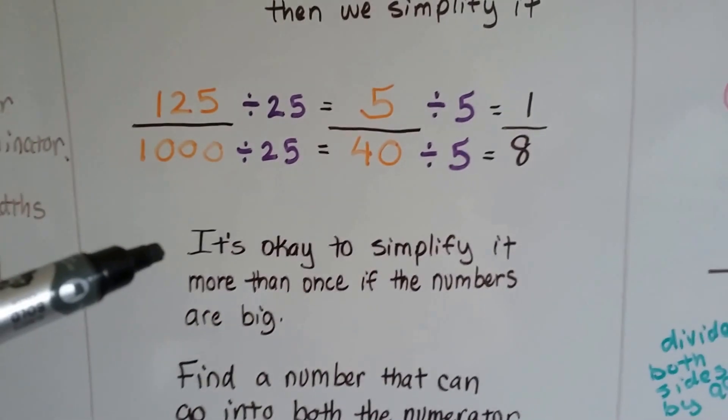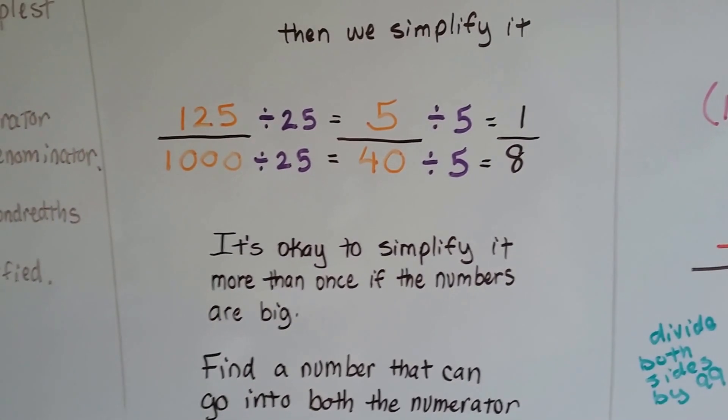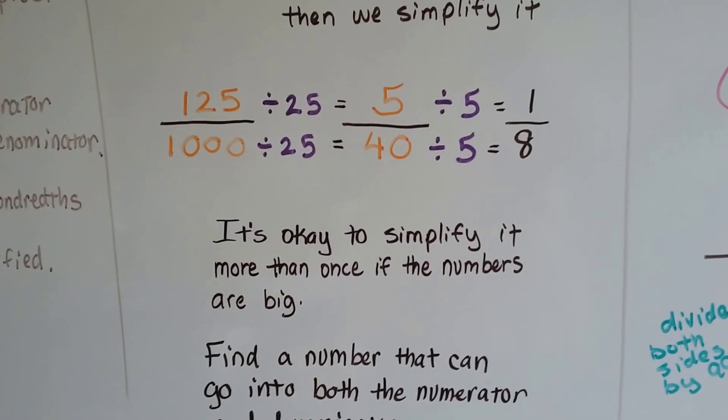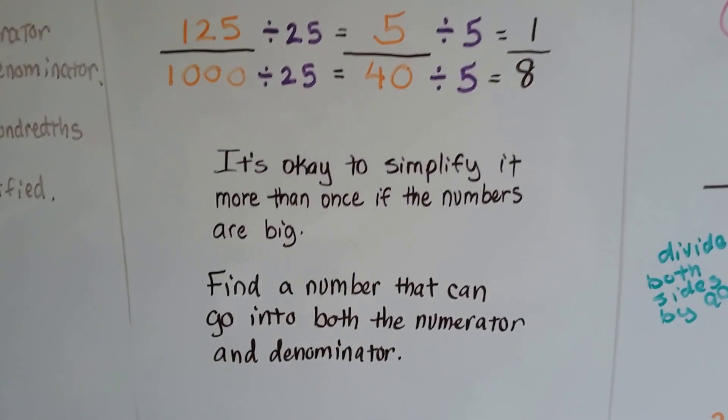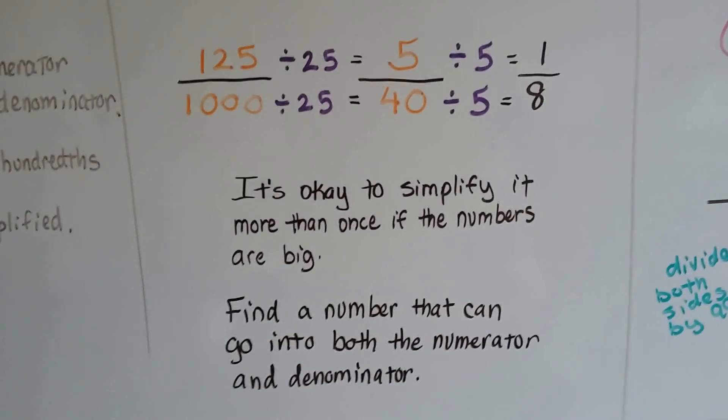So it's okay to simplify it more than once if the numbers are big. You can do this. There's no rule that says you can't simplify it more than once or twice. So find a number that can go into both the numerator and denominator, and you'll be all set. You'll have the rational number, the fraction.